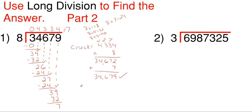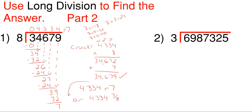So my answer here, excluding the 0 at the start, is 4,334 with a remainder of 7. Or you could write it as 4,334 and take your remainder and divide it by your dividing number of 8 — so 34,679 divided by 8 is 4,334 and 7 eighths. Either one of these answers is acceptable.